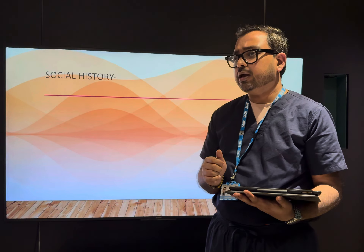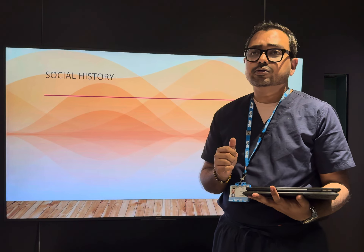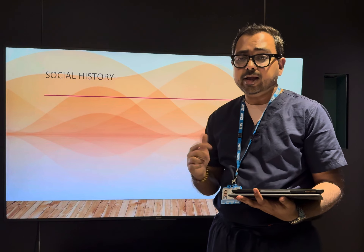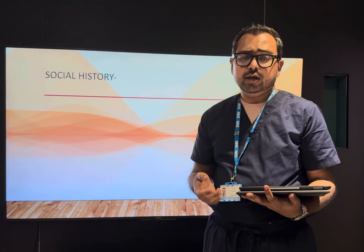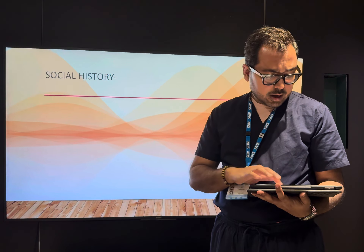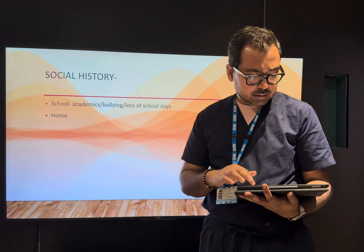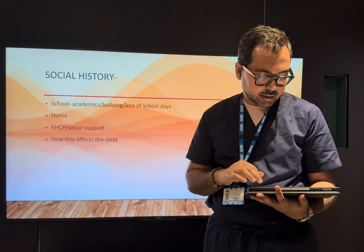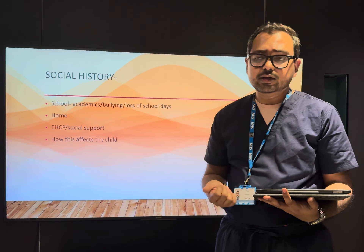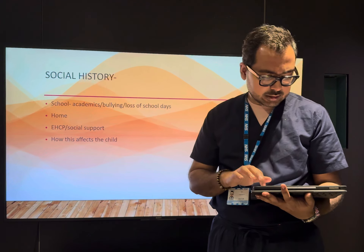Social history is very important because most of the time the hidden agenda lies here, so don't ignore it even if you are running short on time. Ask about school performance, academics, any history of bullying, and loss of school days. Ask about home conditions, any Education Health Care plan, and any social support the family is receiving. Also explore how this is affecting the child's life and the family's life.